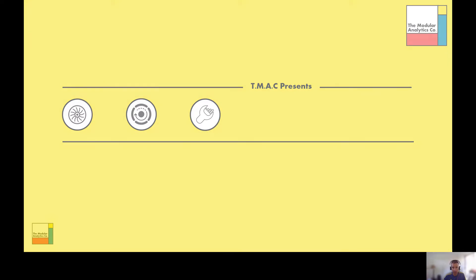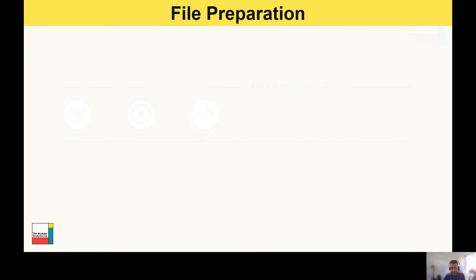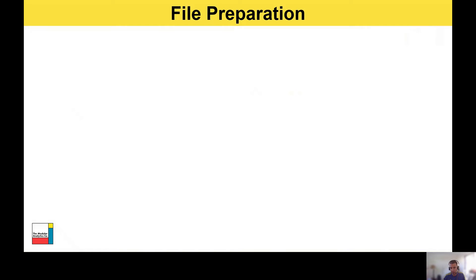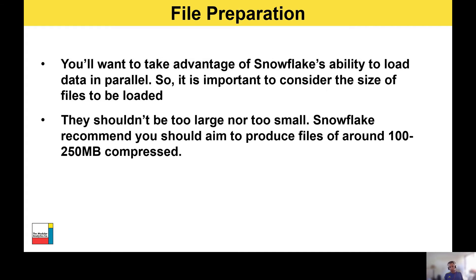Let's get into part two of data movement in Snowflake and start talking about file preparation. You'll want to take advantage of Snowflake's ability to load data in parallel. It's really important to consider the size of the data files to be loaded — they shouldn't be too large nor too small. Snowflake recommends you aim to produce files of around 100 to 250 megabytes compressed.